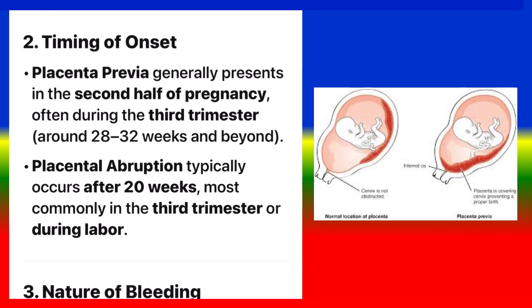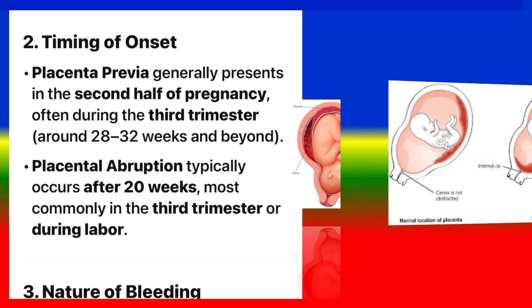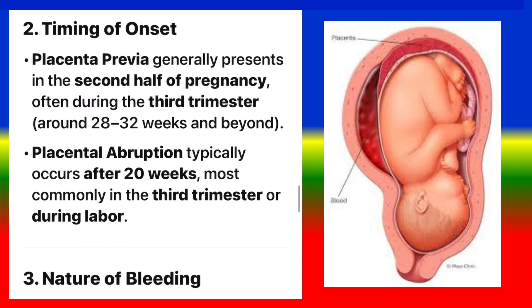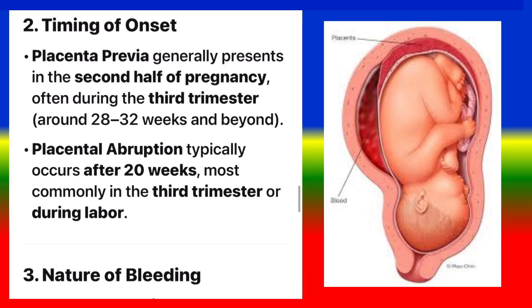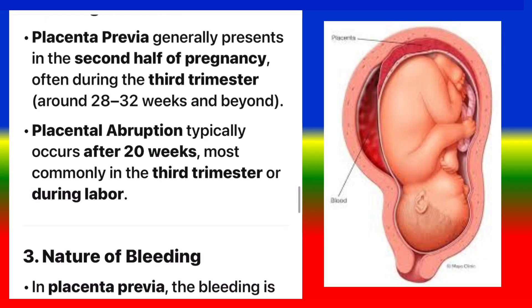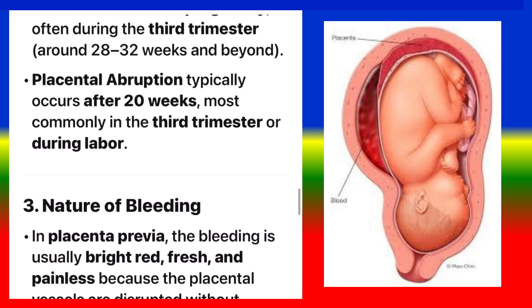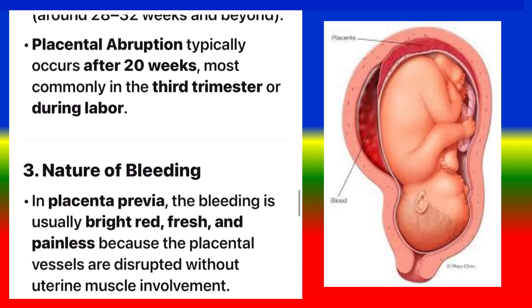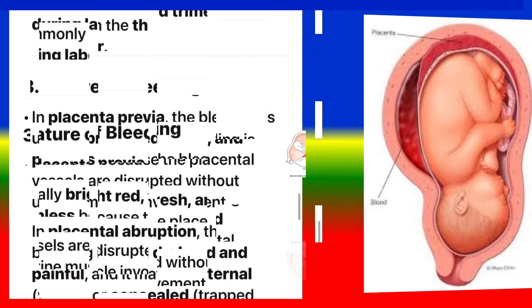Timing of onset. Placenta previa generally presents in the second half of pregnancy, often during the third trimester, around 28 to 32 weeks and beyond. Placental abruption typically occurs after 20 weeks, most commonly in the third trimester or during labor.